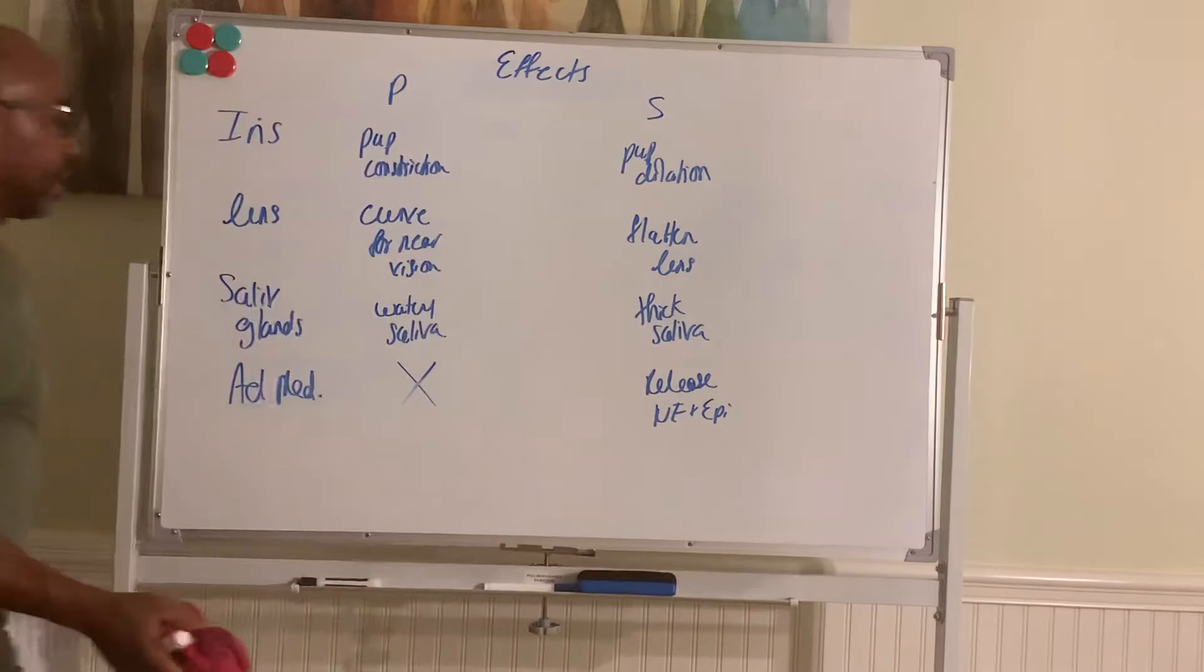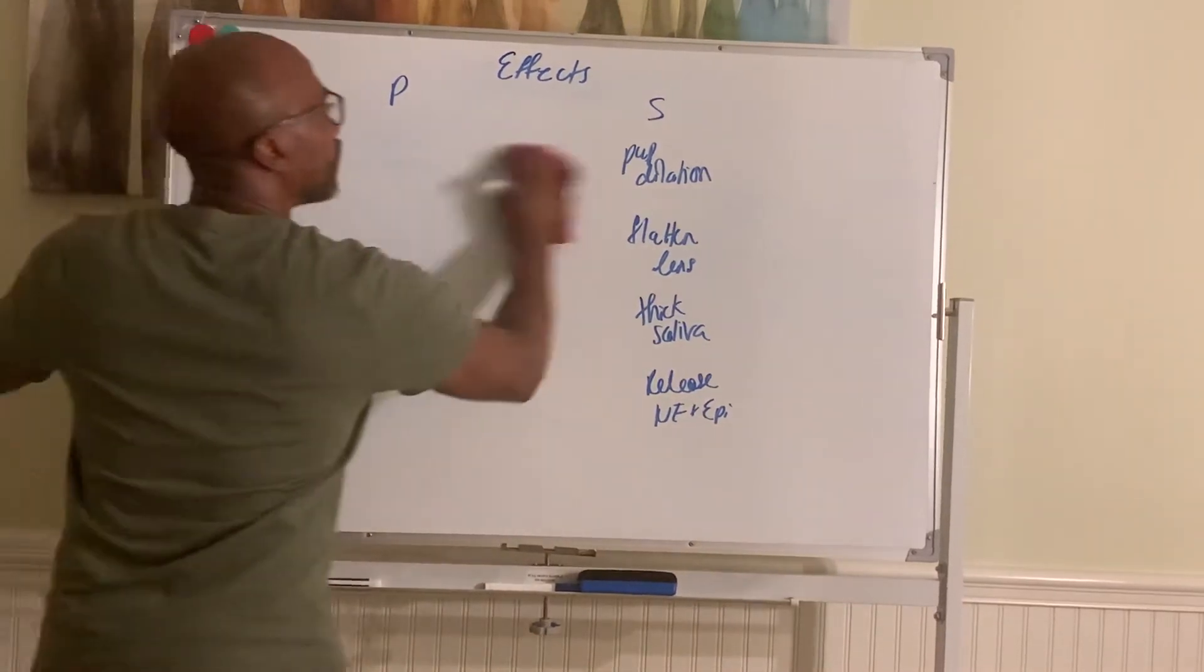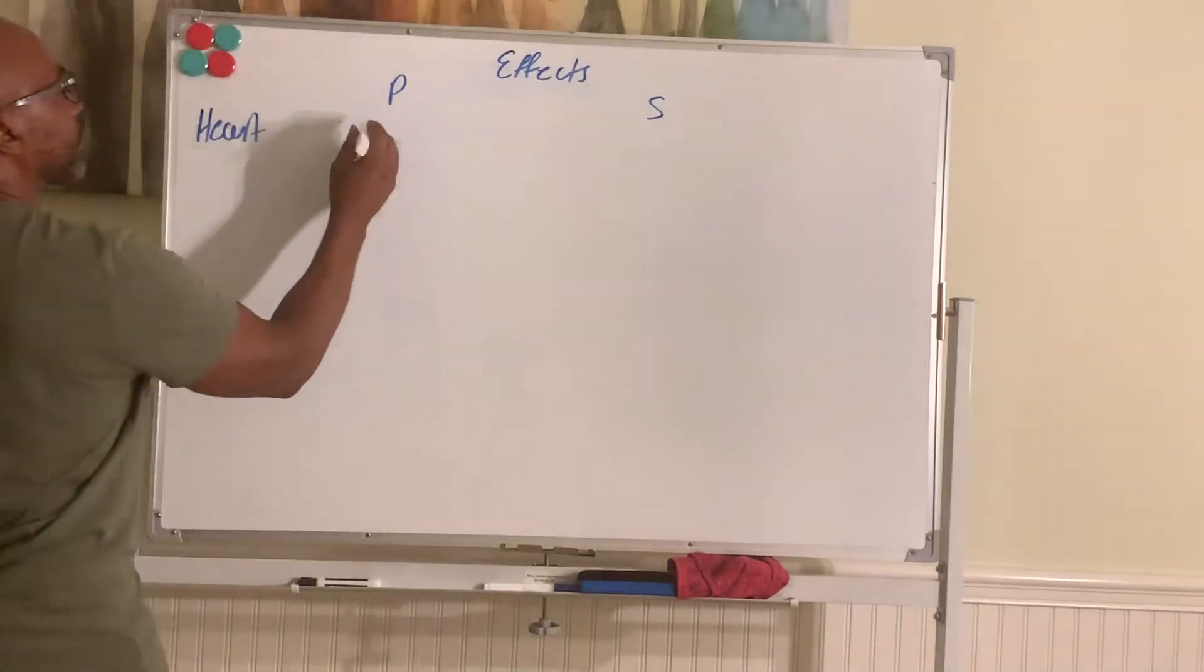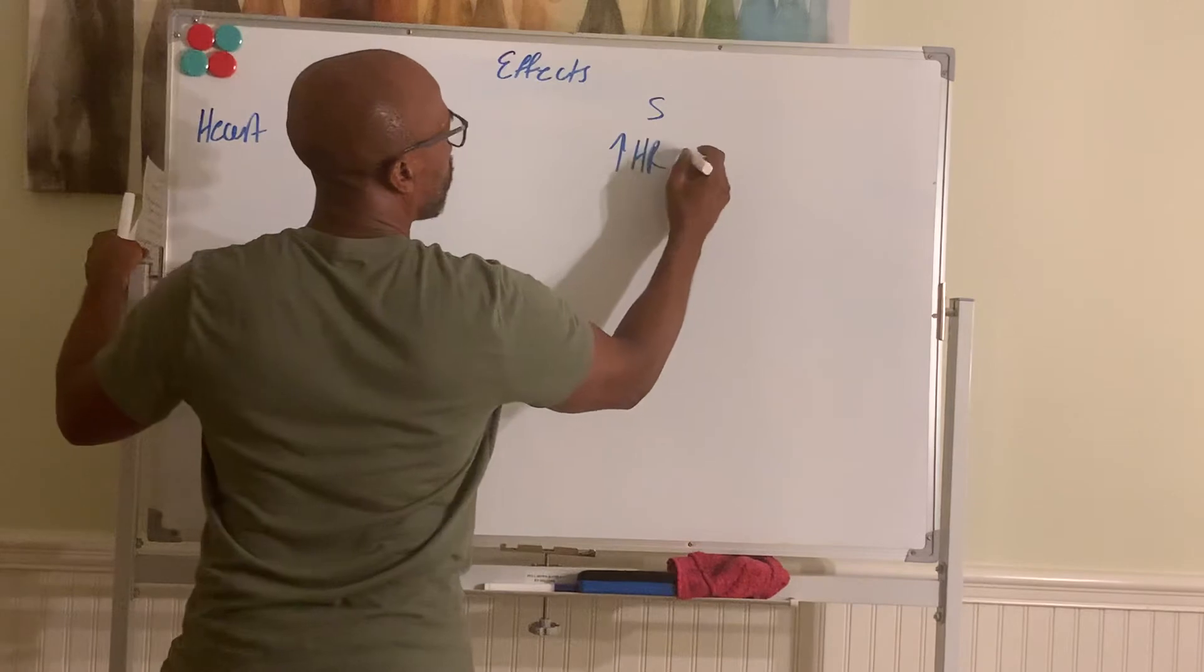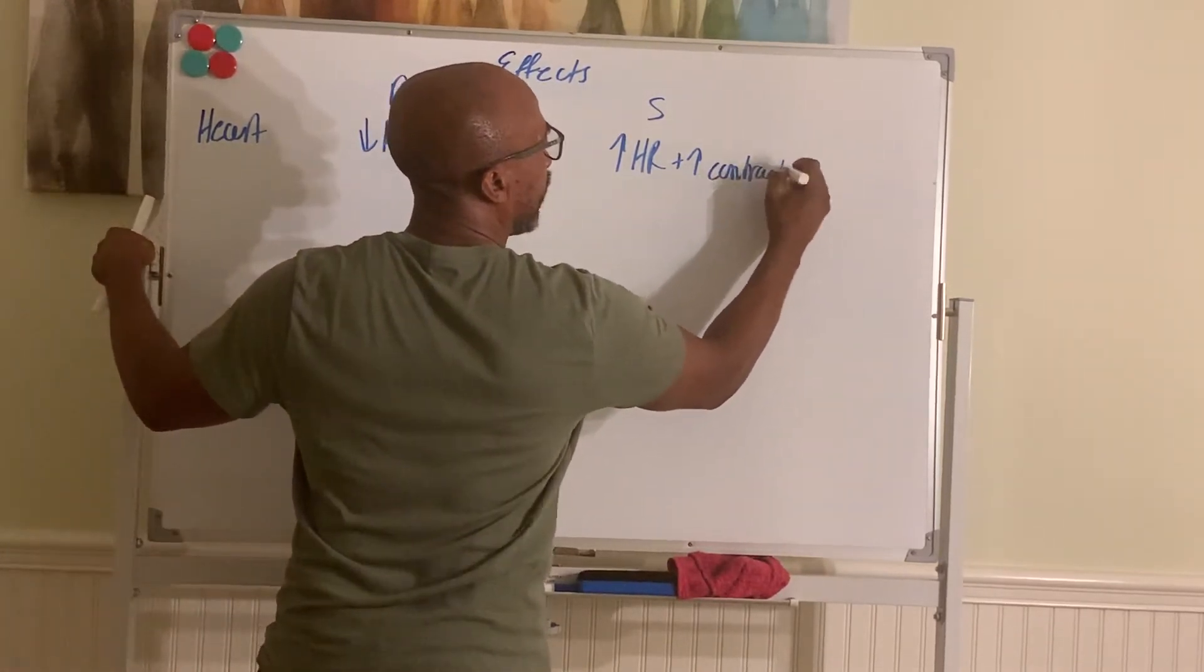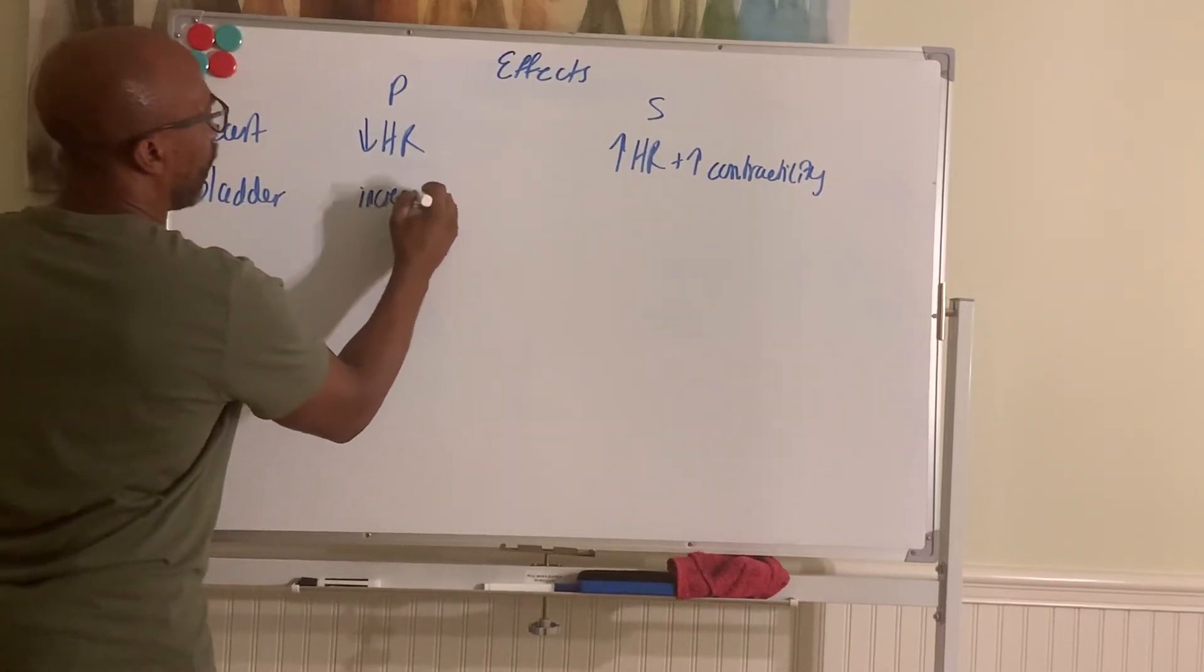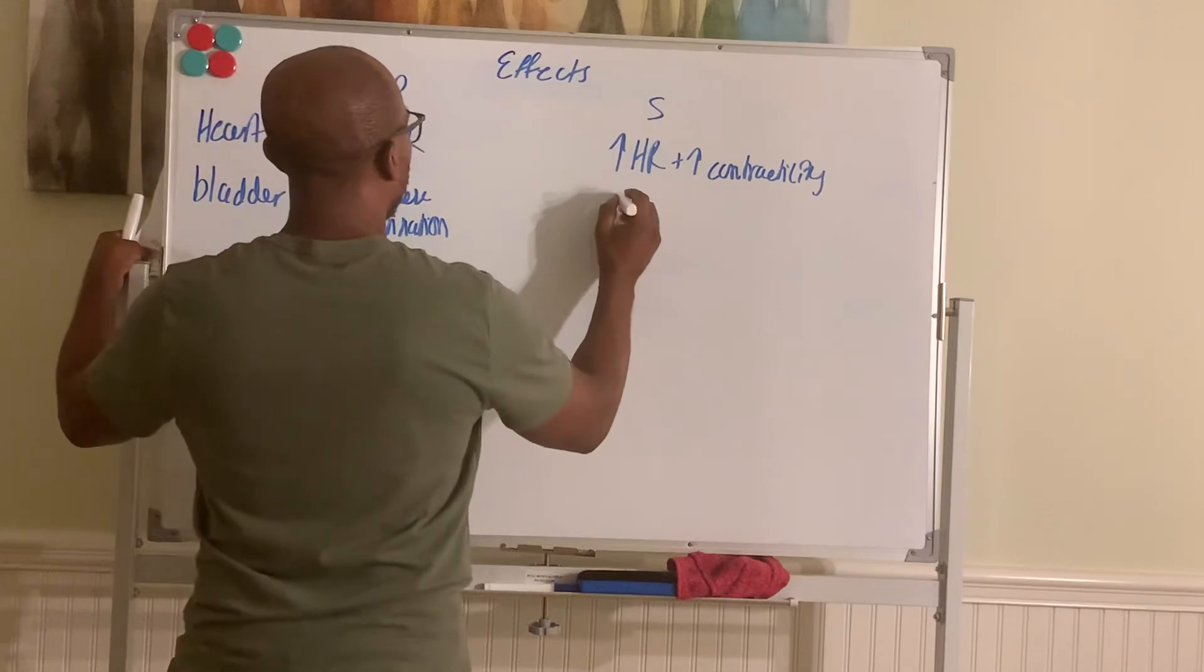We have the heart. So here for the heart, para slows down the heart rate. Simpa speeds it up. And it also increases your force of contraction, what's called contractility. How forcefully the heart squeezes. So here for the bladder, para increases urination. Simpa decreases urination.